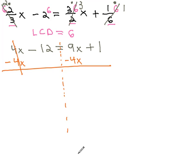4 positives and 4 negatives are 0, and we're left with negative 12 equals 9 minus 4 is 5x's, plus 1.